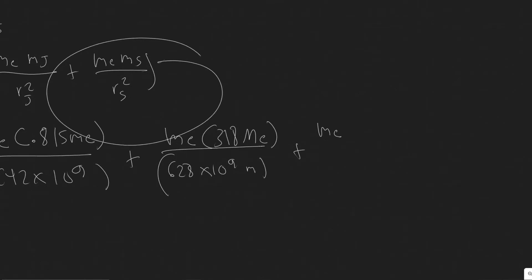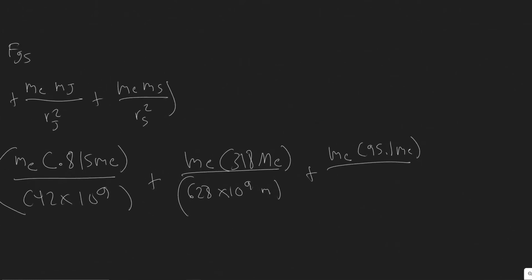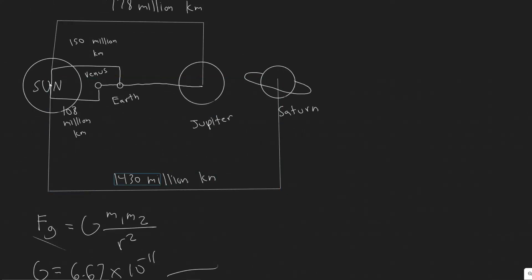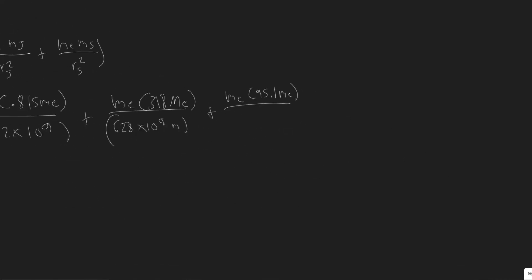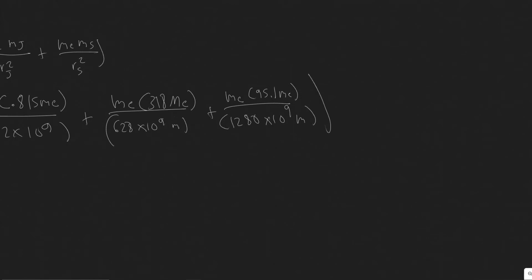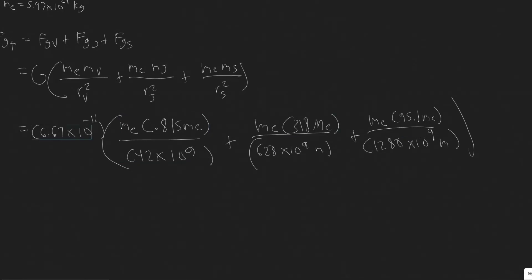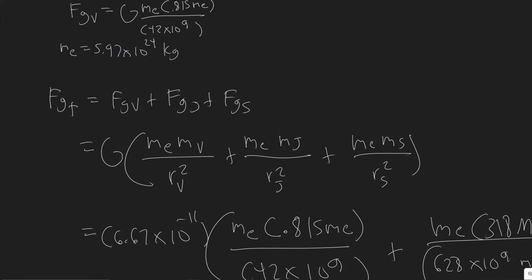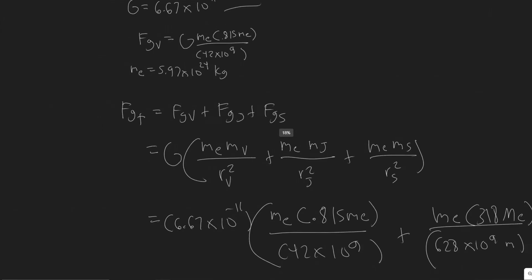For Saturn: the mass is 95.1 Me. The distance from the sun is 1430 million km, so the distance from Earth is 1430 − 150 = 1280 million kilometers. Converting: 1280 × 10⁶ km × 10³ = 1280 × 10⁹ meters. So the Saturn term is Me × 95.1 Me divided by (1280 × 10⁹)².